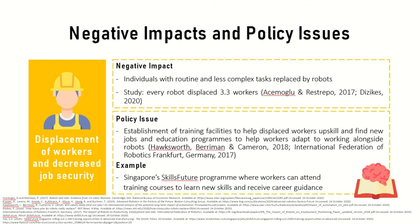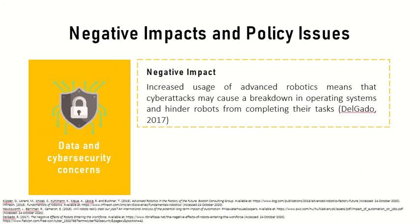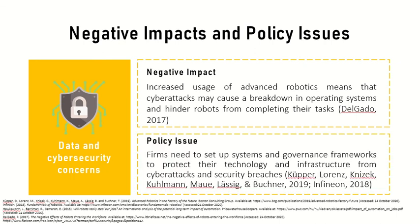Policies involving the establishment of training facilities to help displaced workers upskill and find new jobs, or education programs to help workers adapt to working alongside robots, are thus needed. Examples include Singapore's SkillsFuture program for workers to attend training courses to learn new skills as well as receive career guidance. Another concern is data and cybersecurity. The increased usage of advanced robotics means that cyber attacks may cause a breakdown in operating systems and hinder robots from completing their tasks. Firms thus need to set up systems and governance frameworks to protect their technology and infrastructure from cyber attacks and security breaches.